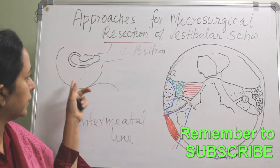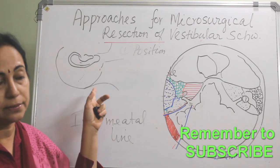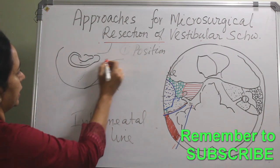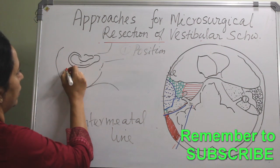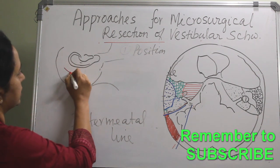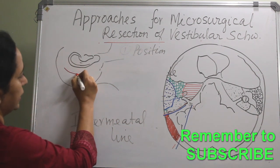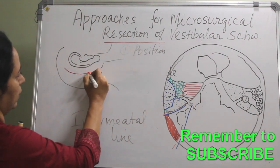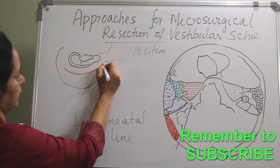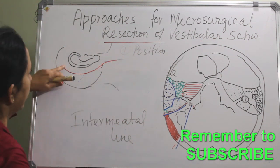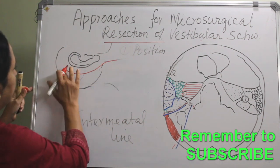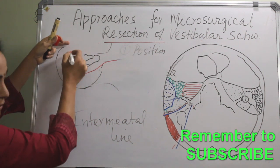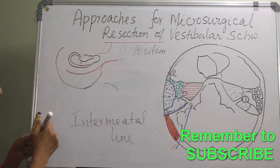After positioning, the incision is next. We can put either a vertical incision or a curved incision, slightly curved backwards and going into the neck as well. The upper end should be almost in line with the zygoma.